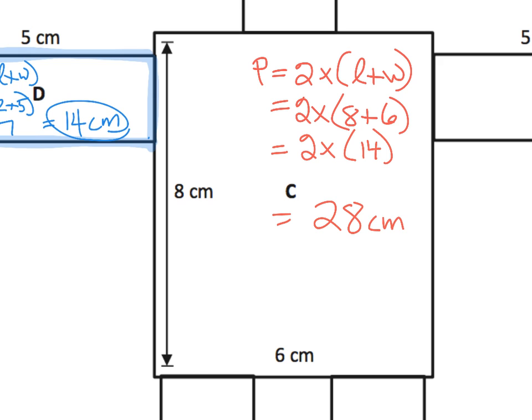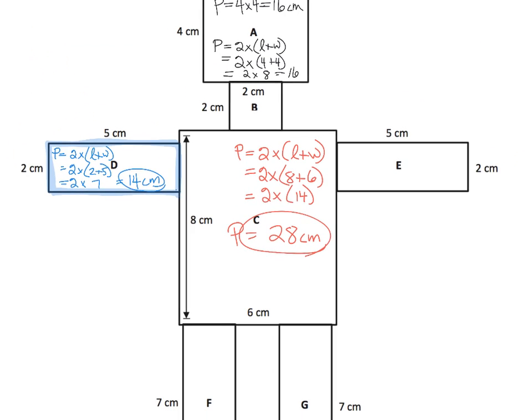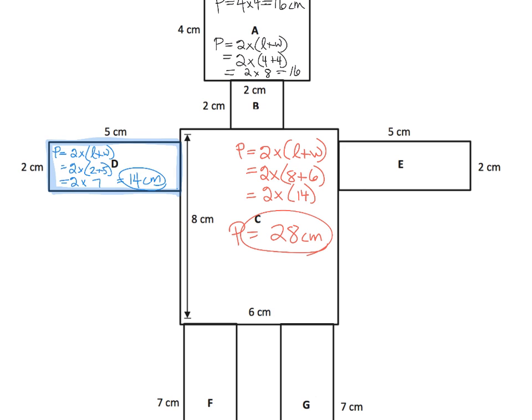So the perimeter of that torso is 28. So what does that mean? Don't forget, we've got to know what it means. It means if you were to add all 4 lengths, or if you were an ant, and you were going to walk all the way around this body, you would have to walk 28 centimeters.